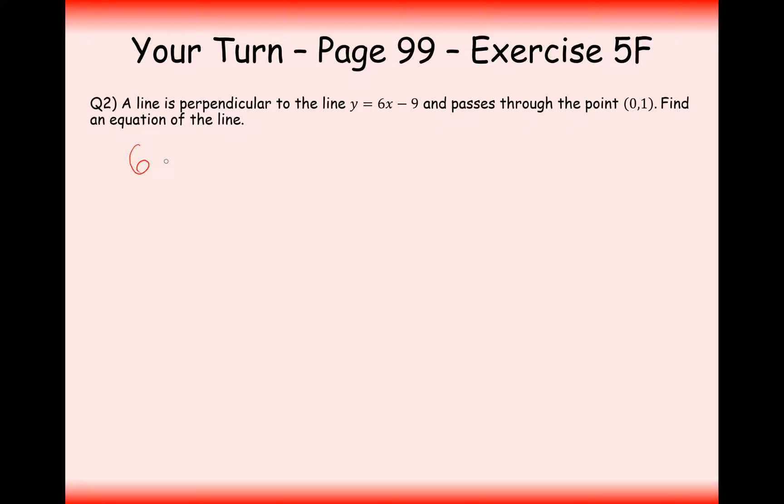So first of all, what I need to do is I need to find some number that would times together by 6 to make minus 1. And in this case here, m is going to be minus a sixth. Or it can be negative 1 over 6, which is exactly what I've got here.